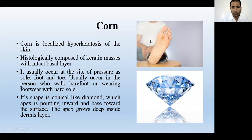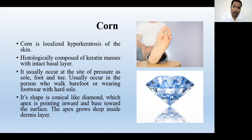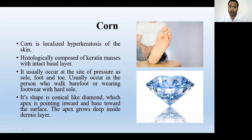Histologically, corn is composed of keratin masses with intact basal layers. There is hyperkeratosis; these keratin masses are hard. They attain a diamond shape — the base of the diamond is outside the skin, and the sharp area, like the tip of a diamond, is inside the skin. This is called the root of the corn.